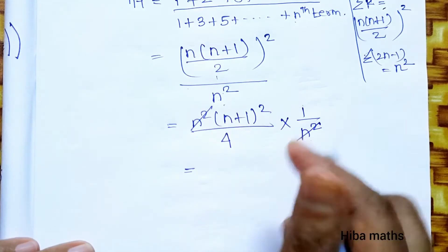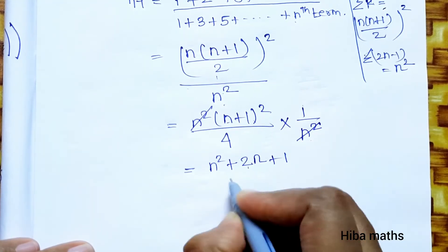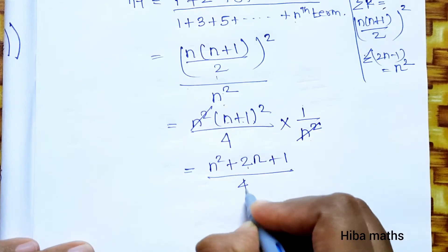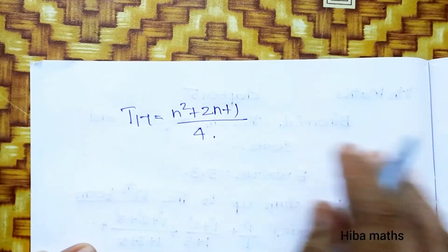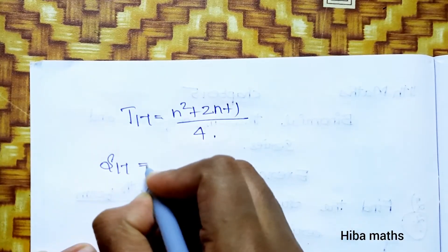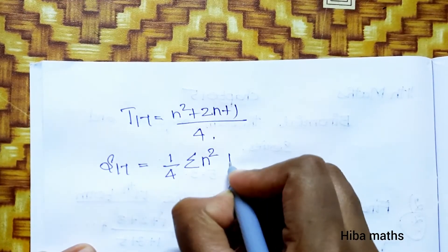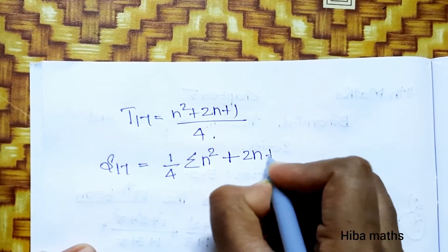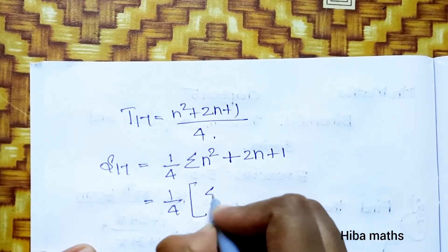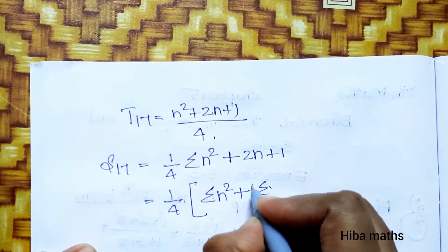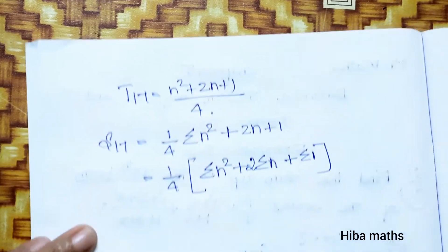After cancellation, T of n becomes (n+1)²/4. Expanding (n+1)² using (a+b)² = a²+2ab+b², we get n²+2n+1 divided by 4. So S of 17 equals (1/4) times the summation of (n²+2n+1), which expands to the summation of n² plus summation of 2n plus summation of 1.